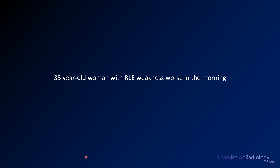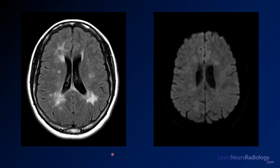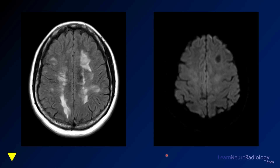The first case is a 35-year-old woman with right lower extremity weakness. On the left you have FLAIR, and on the right diffusion. You're seeing periventricular white matter FLAIR abnormalities, maybe faintly bright on DWI but nothing too concerning. Coming a little bit higher in the brain, you see a little bit more of the same.